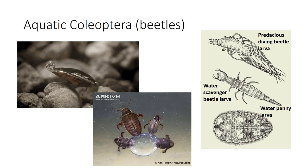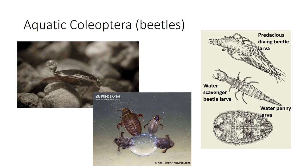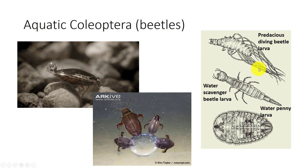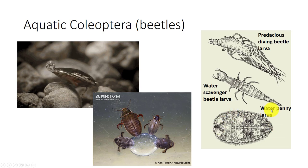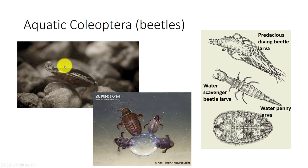The diverse holometabolous order Coleoptera contains over 5,000 aquatic species, although these form less than 2% of the world's described beetle species. Major families that are predominantly aquatic in larval or both larval and adult stages include the whirligig beetle, predaceous diving beetle, crawling water beetles, water scavenger beetle, marsh beetles, water pennies with their characteristically flattened larvae, and rifle beetles. Gas exchange in adults usually involves temporary or permanent air stores. Pupation is terrestrial. Coleoptera exhibit diverse feeding habits, and both larvae and adults of most species are predatory or scavengers.